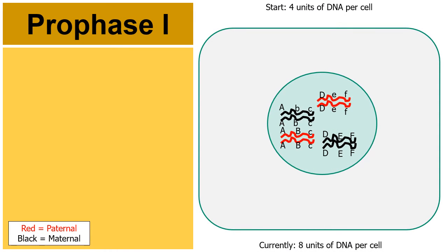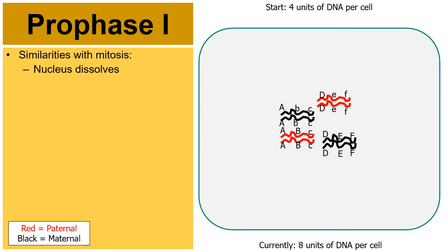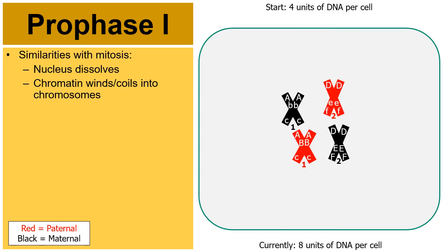Now let's go into the steps of meiosis. There are two stages: meiosis I and meiosis II. Let's begin with prophase I. Similar to prophase in mitosis, the nucleus is going to dissolve. Then the chromatin — the loose, stringy, linear versions of DNA — will coil and wind up into chromosomes.